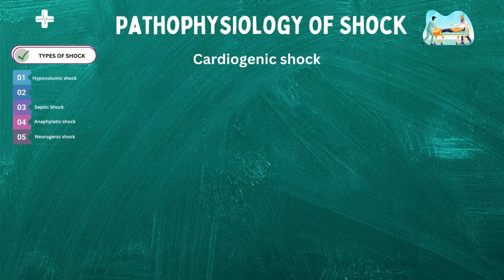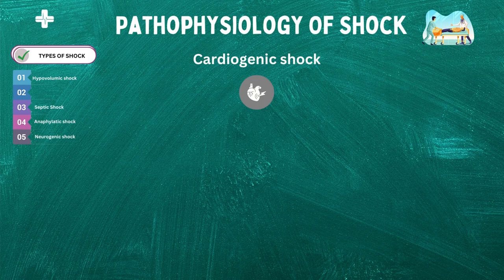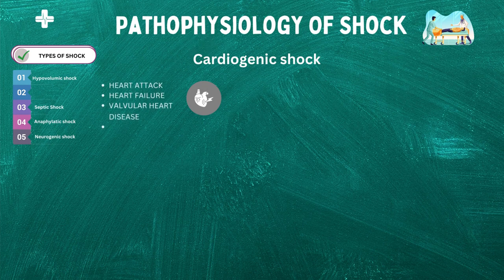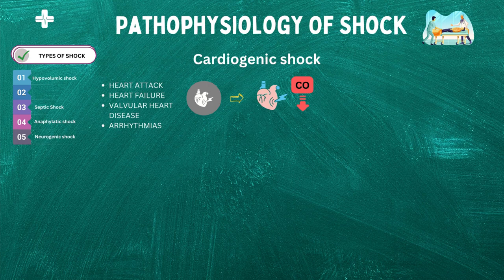We'll now talk about the pathophysiology of cardiogenic shock. Cardiogenic shock is a potentially fatal illness that develops when the heart cannot pump enough blood to meet the needs of the body. Cardiogenic shock can be caused by a number of factors, including a heart attack, heart failure, valvular heart disease, or arrhythmias. Whatever the cause, the end result is a decrease in cardiac output, which causes a cascade of physiological changes that can lead to tissue damage and organ failure.